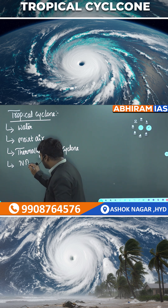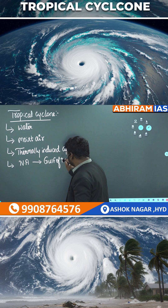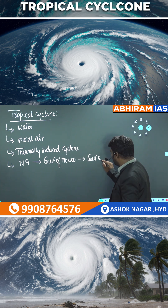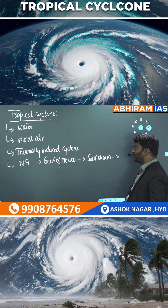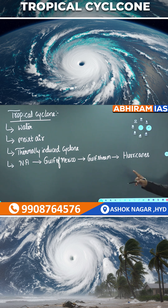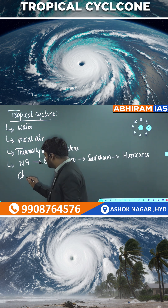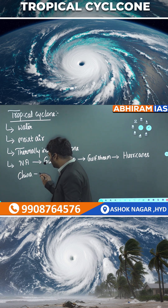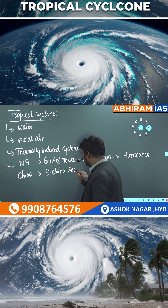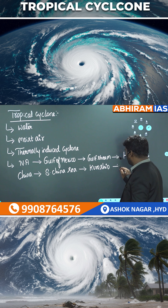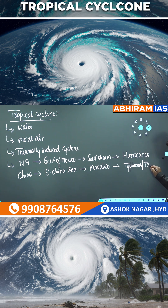If you check North America, Gulf of Mexico — the Gulf Stream is the ocean current there, and cyclones are called hurricanes. In the Asia region, South China Sea region, the Kuroshio warm current is present — cyclones there are called typhoons.